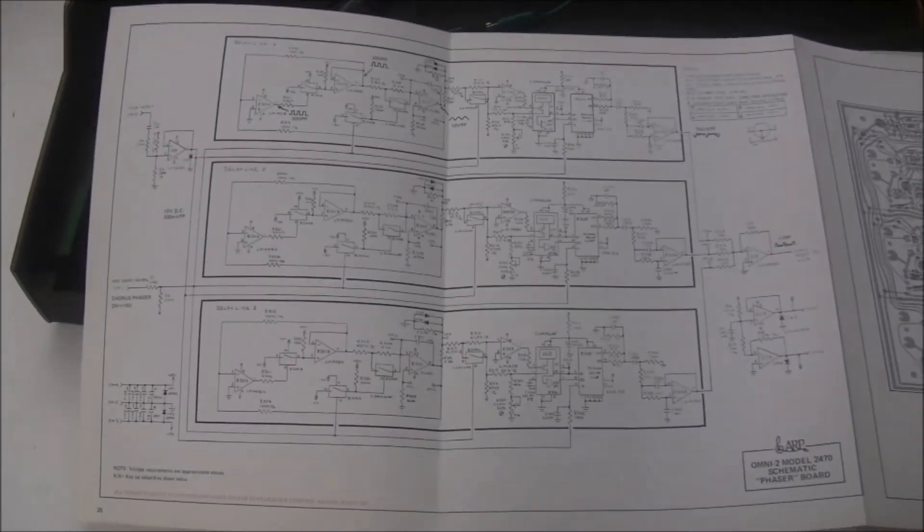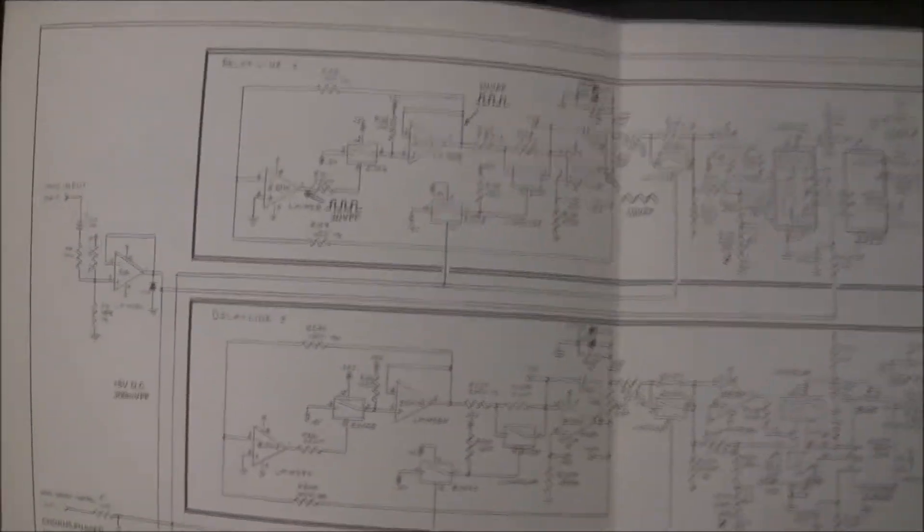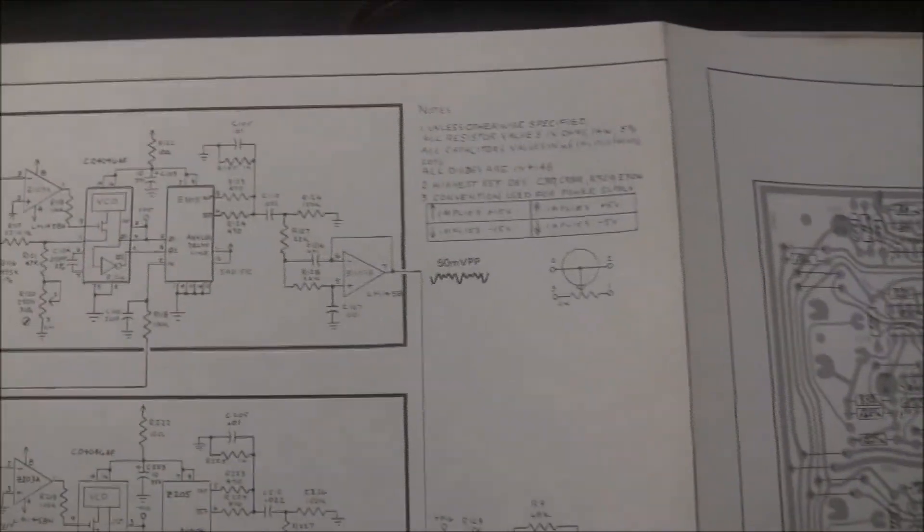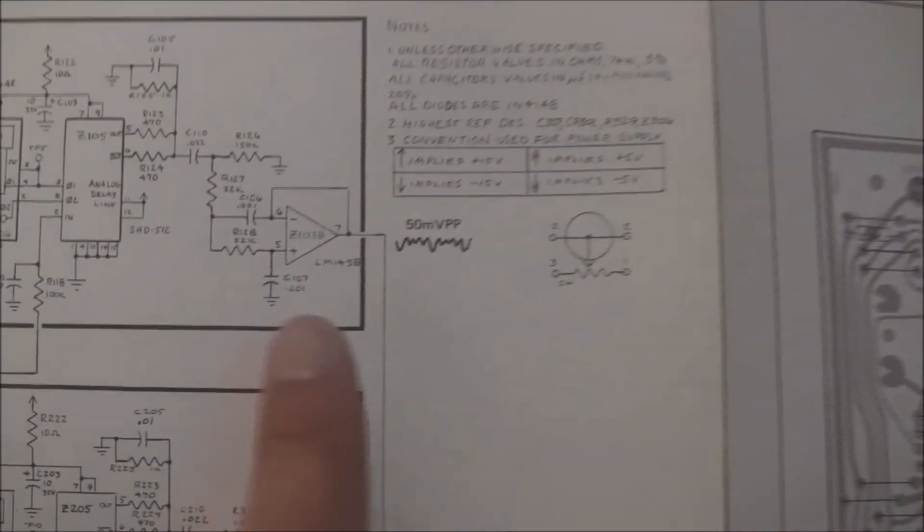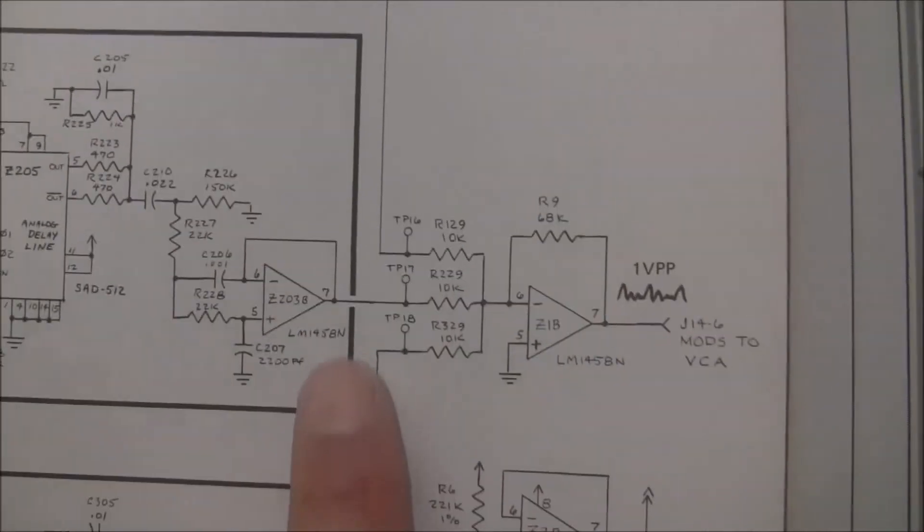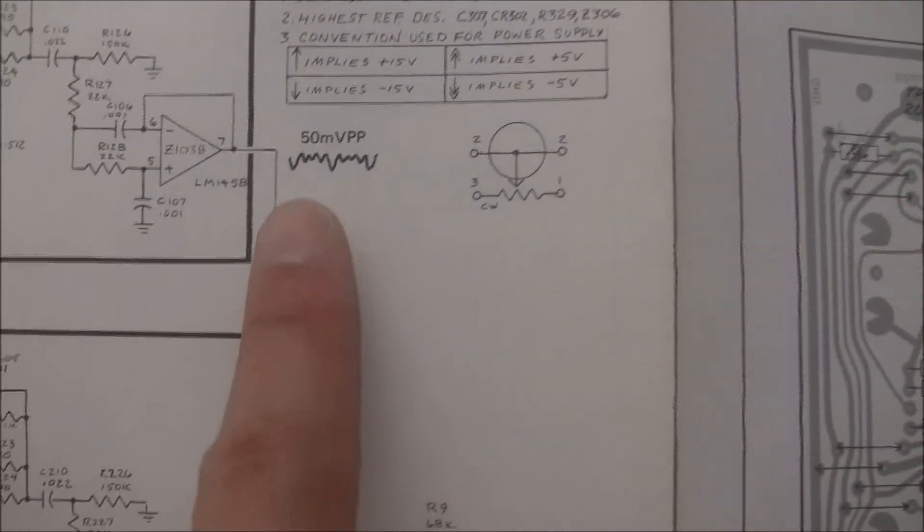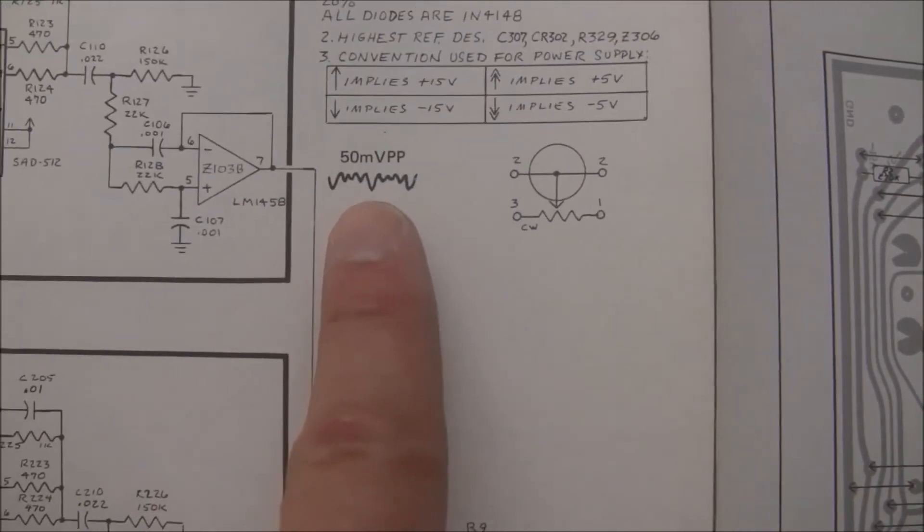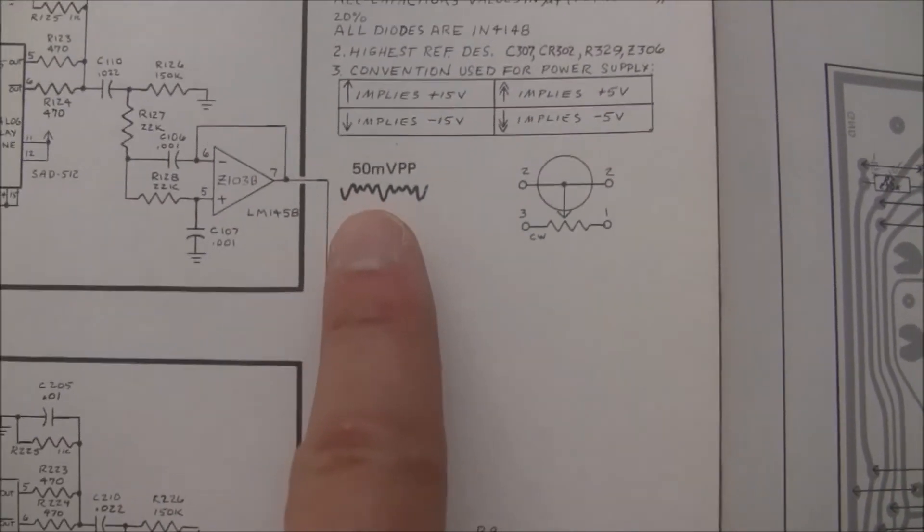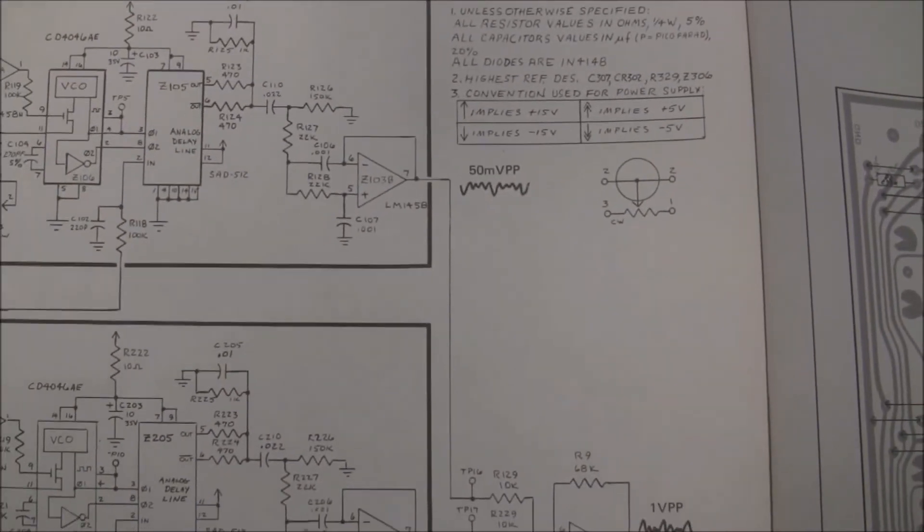So this is the schematic for the phaser board and it's broken it out by delay line. And there's some sample waveforms we can look at. But let's take a look at the output of each of the three delay lines. So if we go to this op amp 103, 203, 303, pin 7 will be the output of the delay line. And they're showing about a 50 millivolt peak to peak waveform that looks something like this. So let's check all three delay lines and see what they look like.